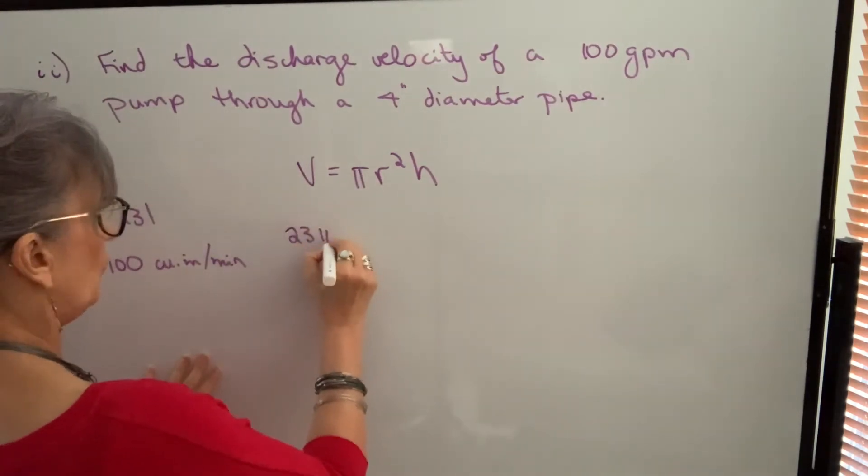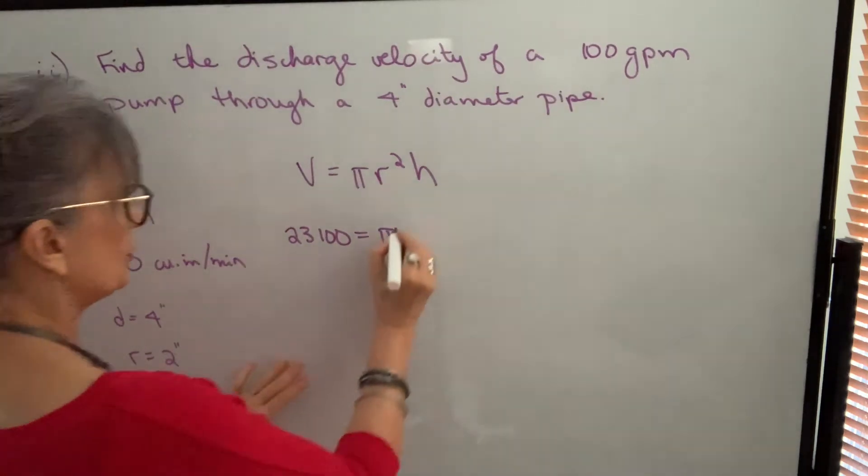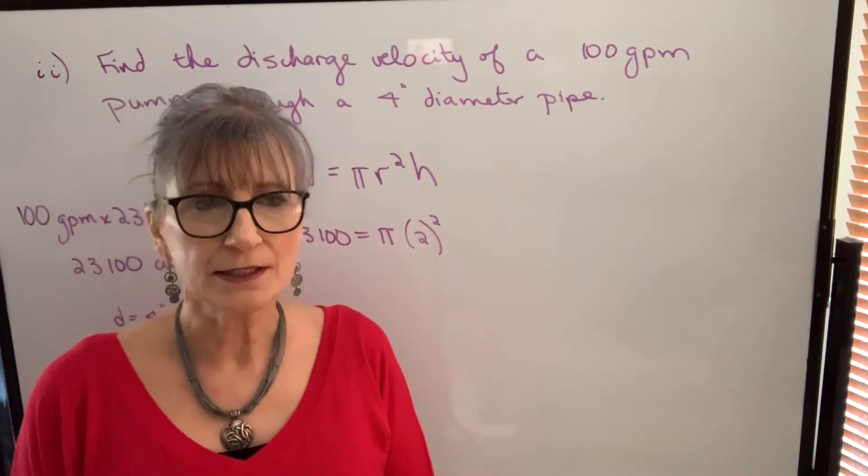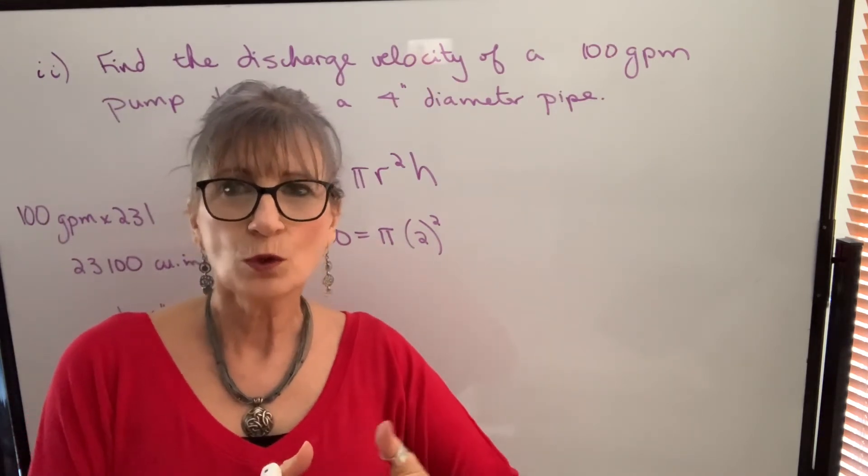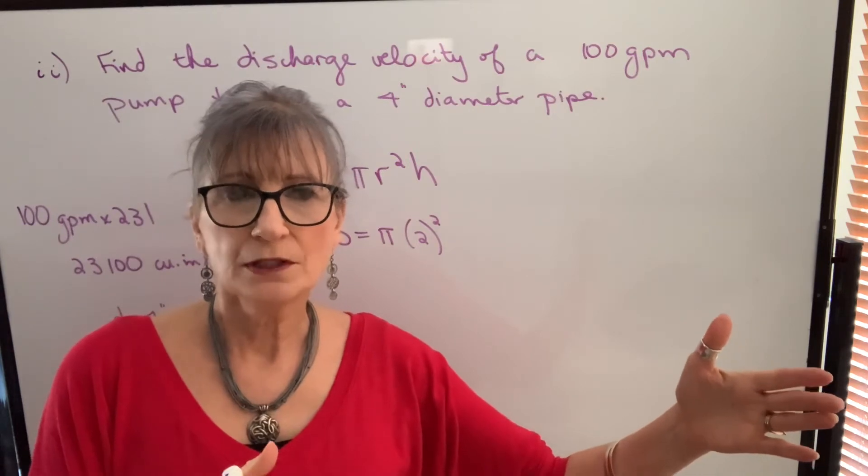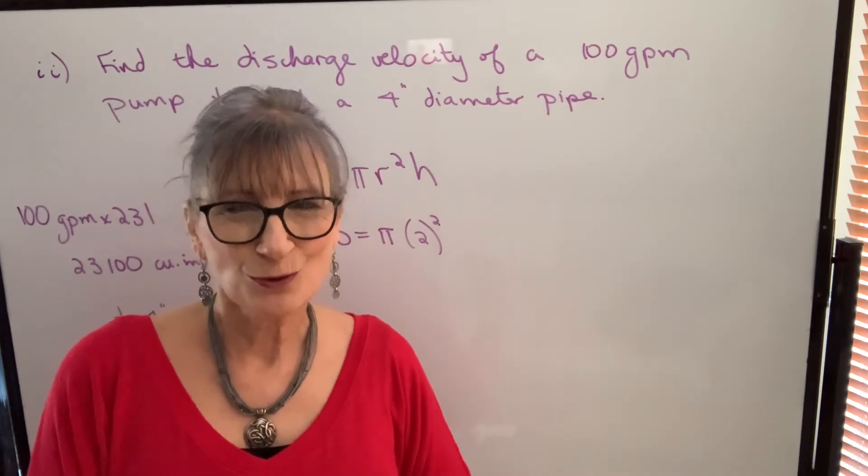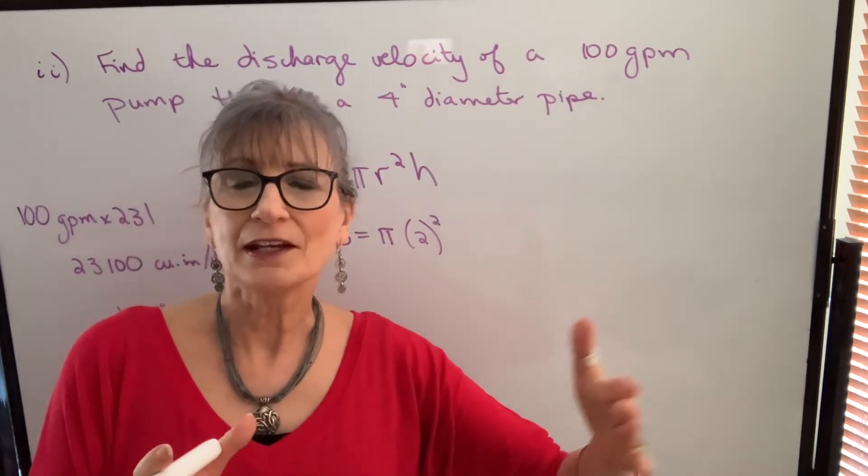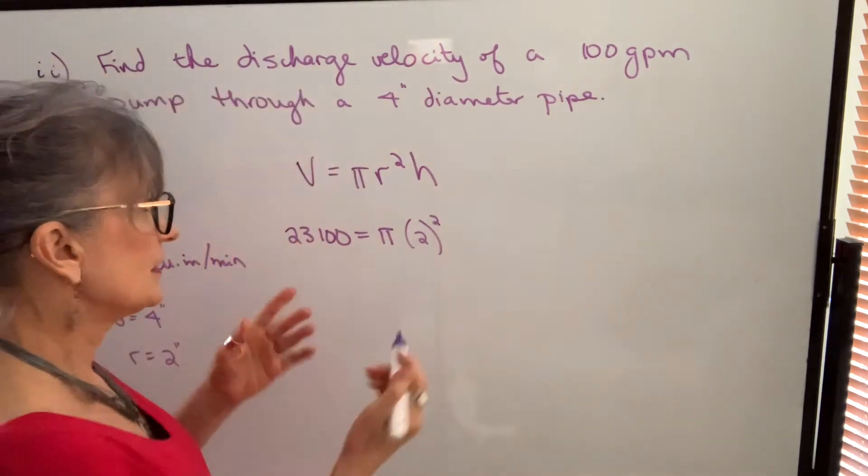So that's the volume of fluid that's flowing through that pipe in one minute of operation. So we're going to put that in for volume. 23,100 will equal pi times, the diameter is 4 inches, which we want to be in inches. Our radius is half of that, so our radius is 2 inches. So we put 2 in for radius. And we're finding the discharge velocity. We're not really finding the height. But in order to find the discharge velocity, we think of it as being height. What total length would that pipe need to be to hold the fluid that's discharged in a minute of operation of that pump? So we think of it as height, even though it truly isn't really a height of the pipe. But it's the distance that that fluid will travel, which would be the same as what the length or the height of the pipe would have to be to hold the discharge in a minute of operation.